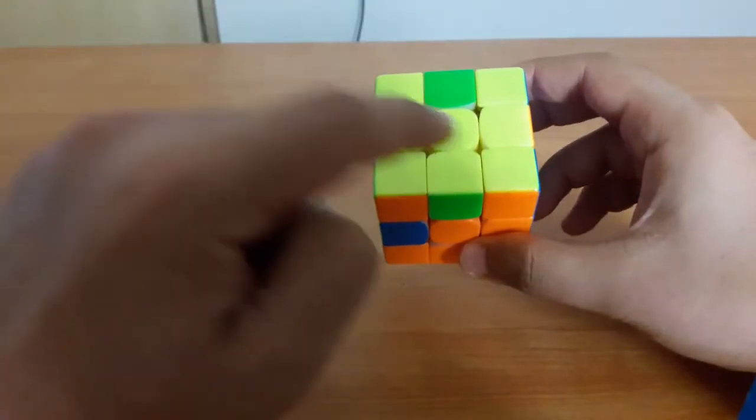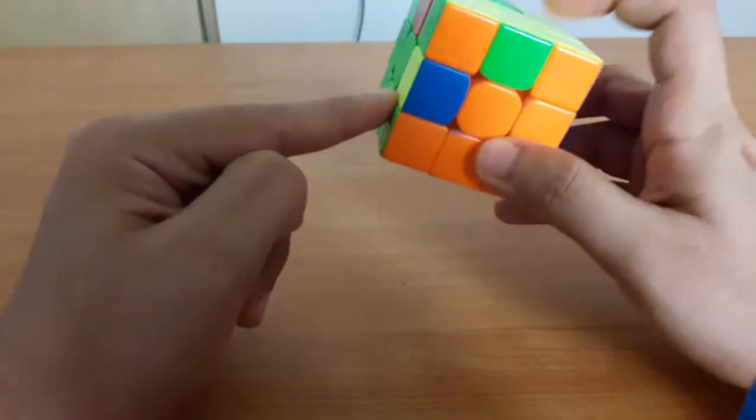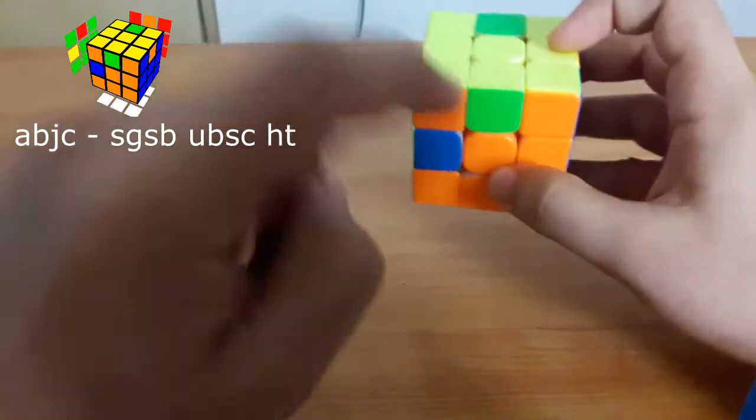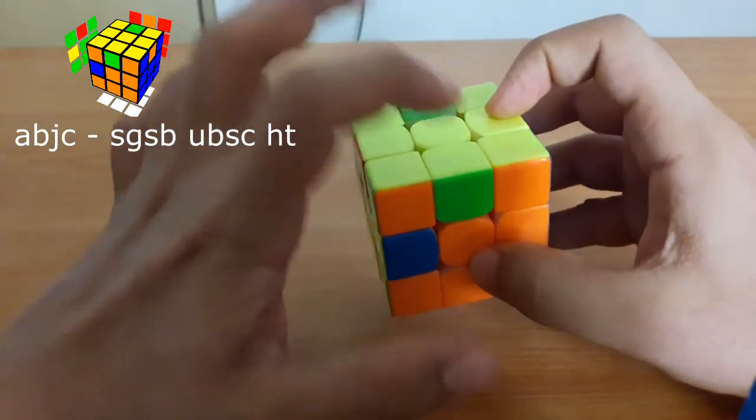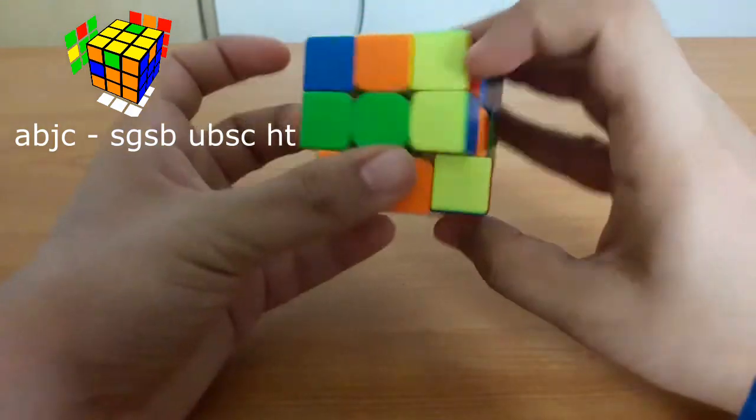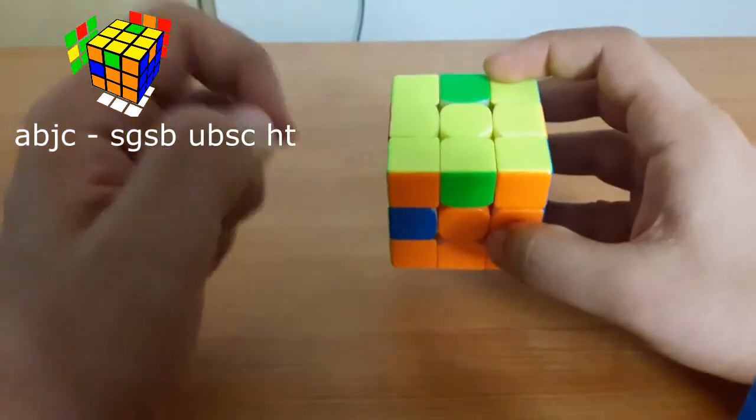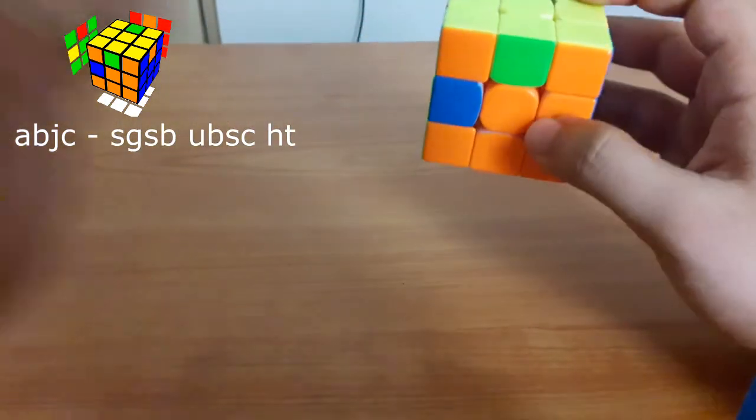The next alg that we have is ABJC, and this combines two really fast three-style algs: the U on the left and the U R prime DR R prime UR insert. But the alg...